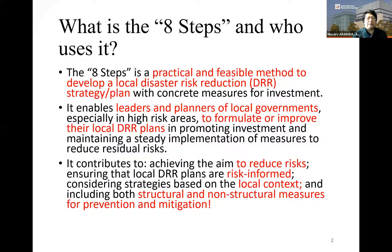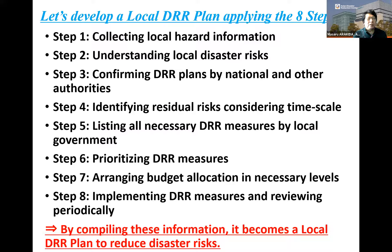What is the eight step and who uses it? The eight step is a practical and feasible method to develop a local disaster risk reduction strategy plan with concrete measures for investment. It enables leaders and planners of local governments, especially in high-risk areas, to formulate or improve their local DRR plan in promoting investment and mainstreaming steady implementation of measures to reduce risk — ensuring local DRR plans are risk-informed, considering strategies based on local context, and including both structural and non-structural measures for prevention and mitigation. The eight steps consist of eight steps that, when compiled, become a local DRR plan to reduce disaster risks.